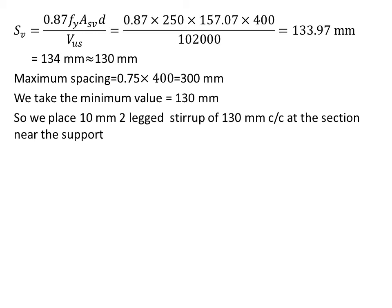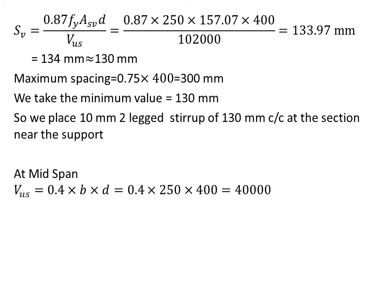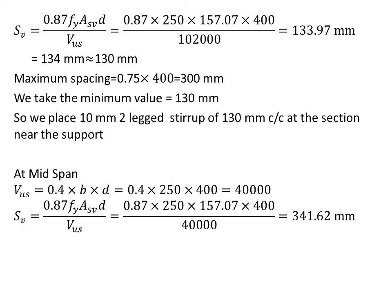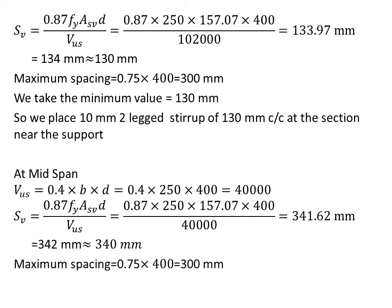At mid-span we provide minimum reinforcement. The shear force for minimum stirrups is VUS = 0.4 × B × D = 40,000 N. Substituting in the spacing formula gives 341.62 mm, rounded to 340 mm. Checking maximum spacing: 0.75 × 400 = 300 mm, which is the minimum. So we provide 10 mm diameter two-leg stirrups at 300 mm spacing at mid-span.